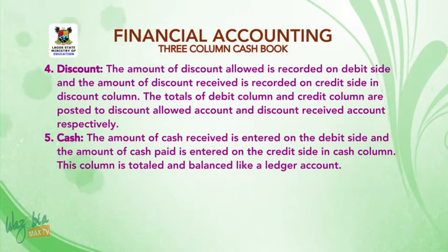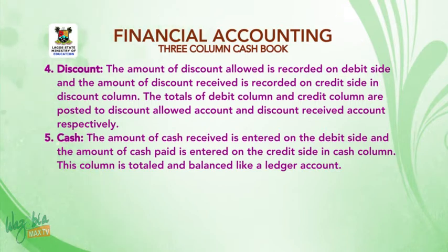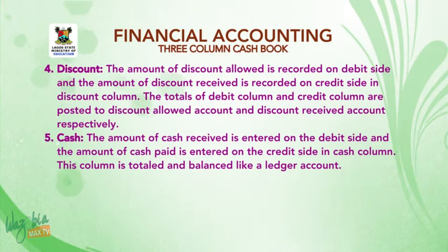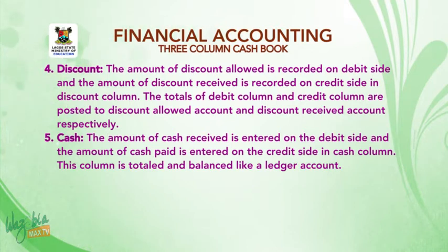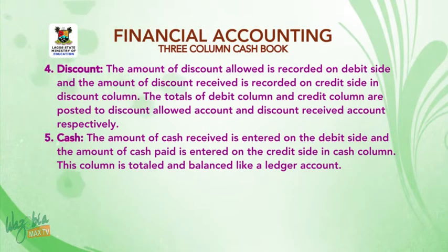Number four, discount — the amount of discount allowed is recorded on the debit side, and the amount of discount received is recorded on the credit side in the discount column. The totals of debit and credit discount columns are posted to the discount allowed account and discount received account respectively. Number five, cash — the amount of cash received is entered on the debit side and the amount of cash paid is entered on the credit side in the cash column. This column is totaled and balanced like a ledger account.